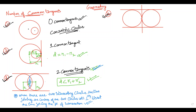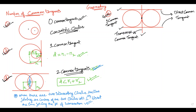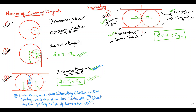Case four: the two circles touch each other externally at one point. In such cases there are three common tangents: two are called direct common tangents and one is called a transverse common tangent. Here the distance between the centers d = r1 + r2, which is the sum of the two radii.